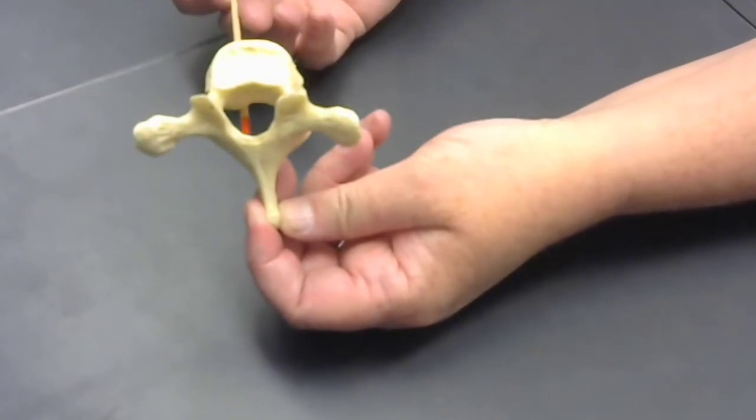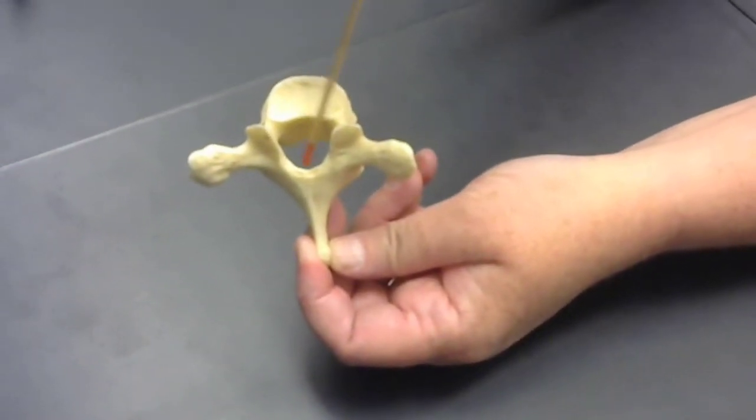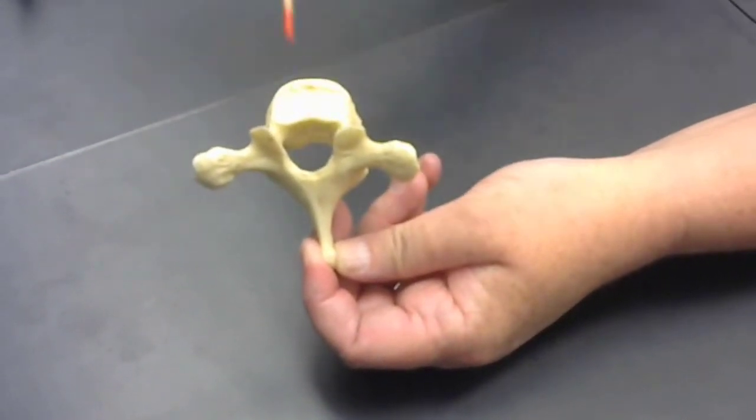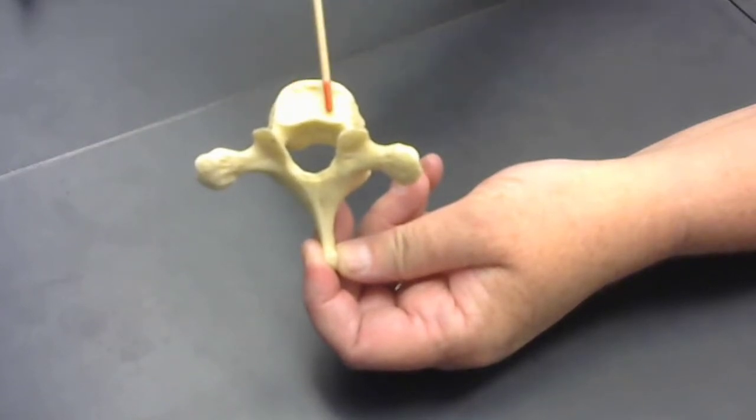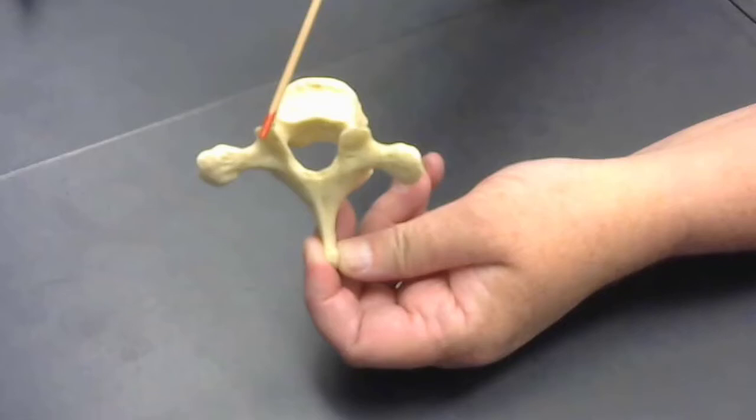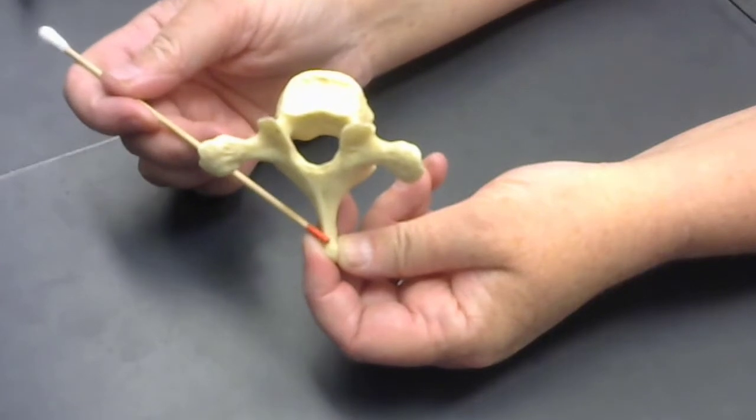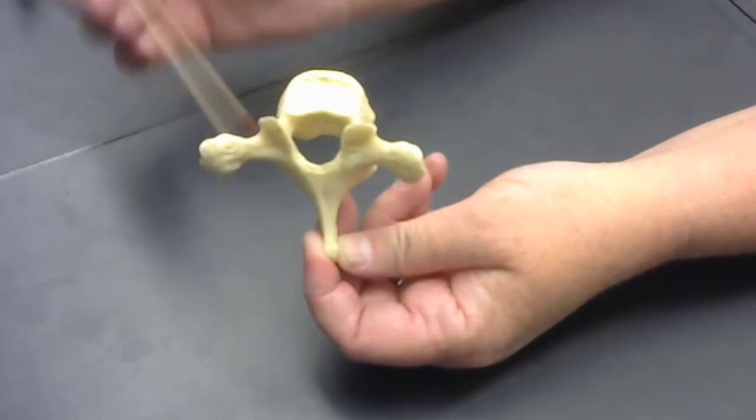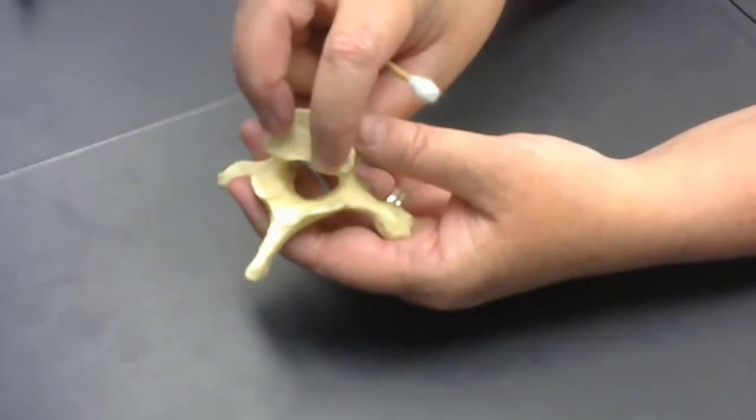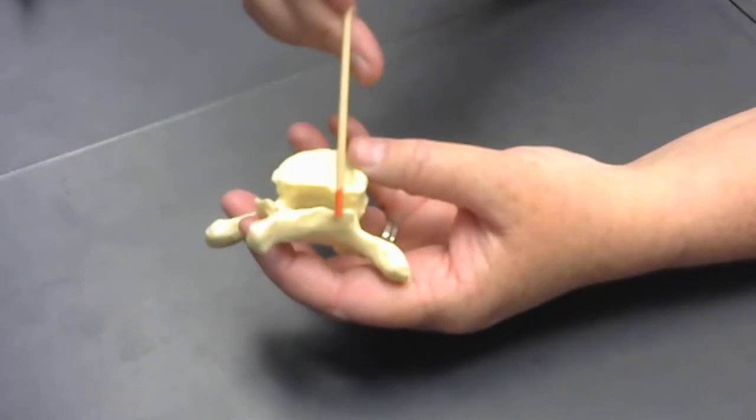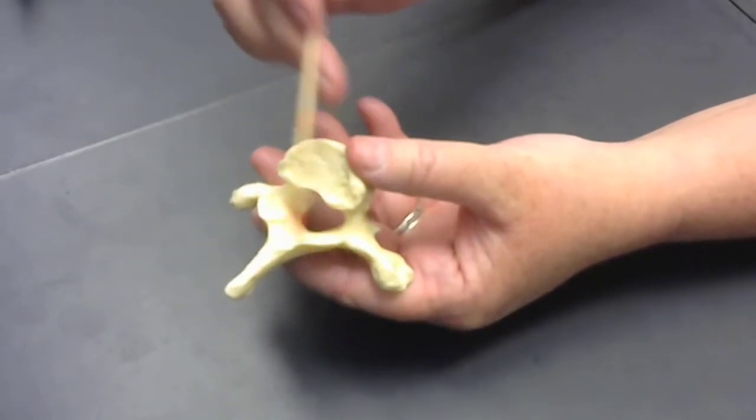So let's do the thoracic first. So this is the vertebral foramen. This is the body. Articulating process, articulating process, transverse process, transverse process, and spinous process. And if you're interested, I also have two articulating processes in the bottom here as well. One there and one there.